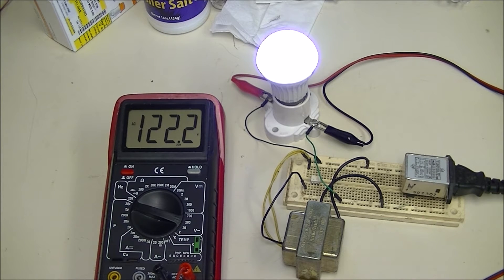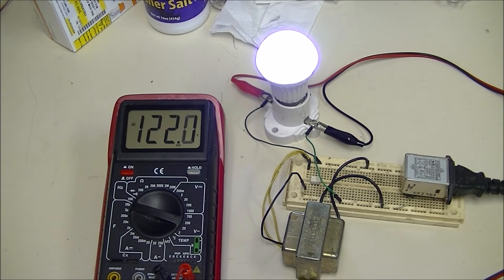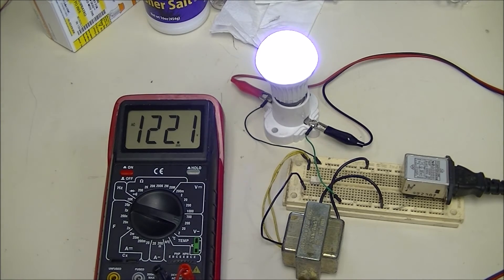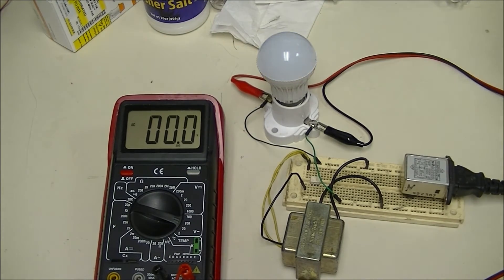By using the secondary of the transformer and wiring it appropriately depending on phase angle into the primary, I can boost or reduce the output voltage to the lamp. I can subtract 25 volts or so, or I can add 25 volts or so.